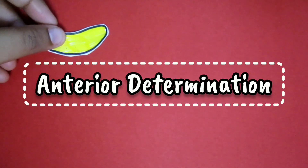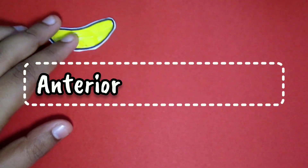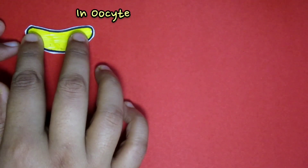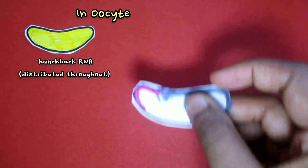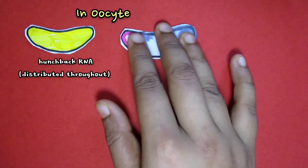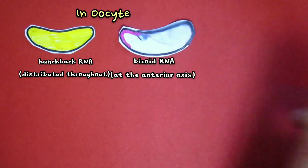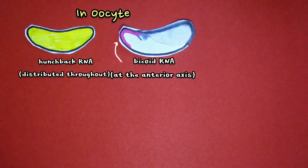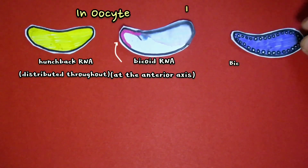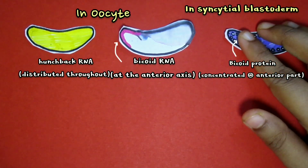This differential translation produces concentration gradients of the proteins encoded by these two genes. Hunchback protein is concentrated in the anterior part of the embryo and caudal protein is concentrated in the posterior part. These two proteins then function to activate or repress transcription of genes whose products are involved in differentiation of the embryo along its anterior-posterior axis.